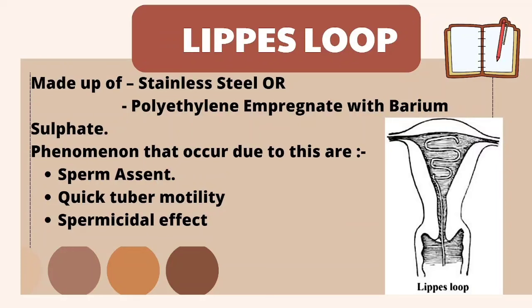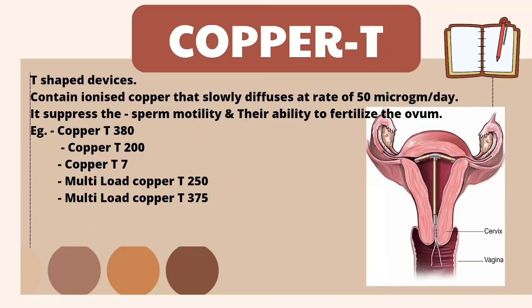The Lippes loop works by decreasing sperm motility, increasing fallopian tube motility so the immature ovum travels fast and fertilization may not occur, and also by a spermicidal effect in the uterus. Copper T is a T-shaped device containing ionized copper atoms released in the uterus at 50 micrograms per day, providing a spermicidal effect and preventing sperms from entering the fallopian tube. Examples include Copper T380, Copper T200, Copper T7, and multi-load copper Ts such as T250 and T375.